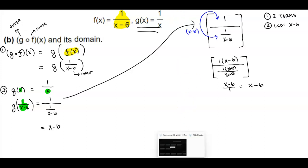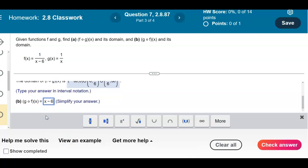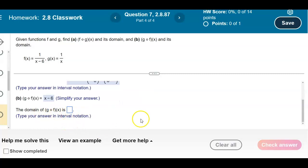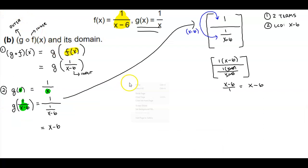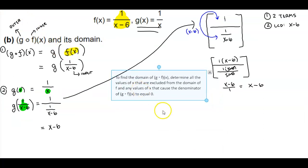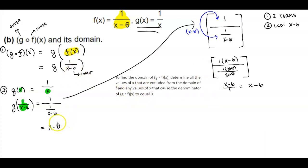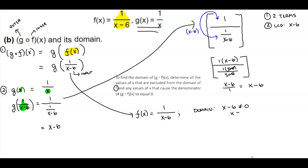So g composite f of x equals x minus 6. Now we need to find the domain of the composite function. To find the domain of g composite f of x, we determine all values of x excluded from the domain of f (the input) and any values causing the denominator to equal 0. Since f of x equals 1 over x minus 6, the denominator x minus 6 cannot equal 0.